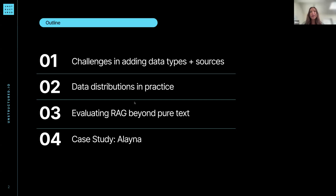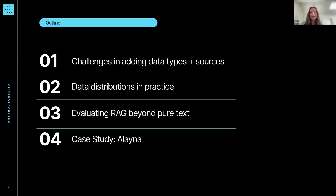Today I'm going to go over challenges in adding data types and formats beyond pure text, the data distributions that we see in practice, some considerations when evaluating RAG beyond pure text, and then I'll spend most of the time on the case study — getting into the recipe of how you extract images, tables, and other non-text elements using Unstructured.